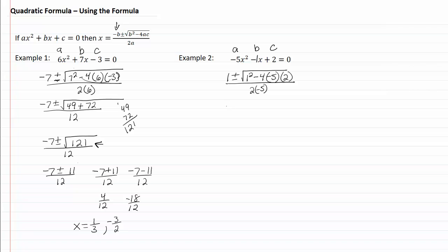Simplifying this, I get one plus or minus the square root of one — two negatives, that'll be positive — so it'll be plus forty, all over negative ten. That gives me one plus or minus the square root of forty-one, all over negative ten. Forty-one is a prime number, it will not simplify, so this would be my answer.